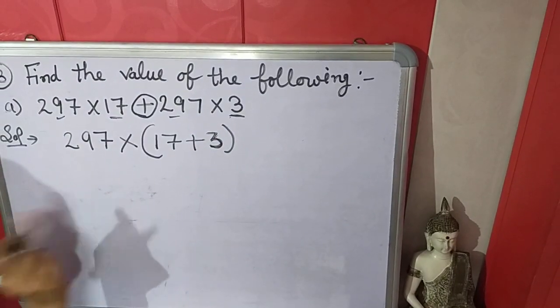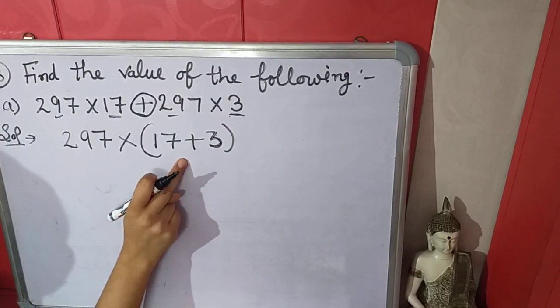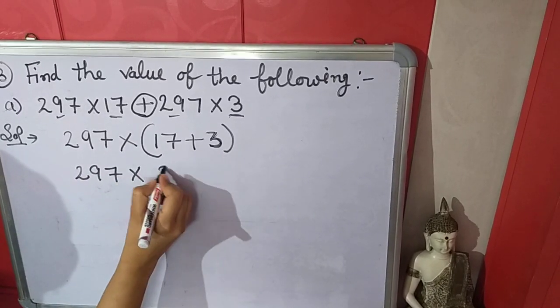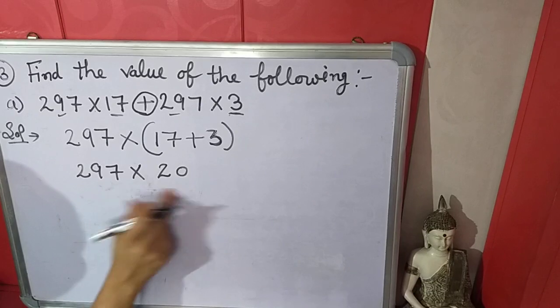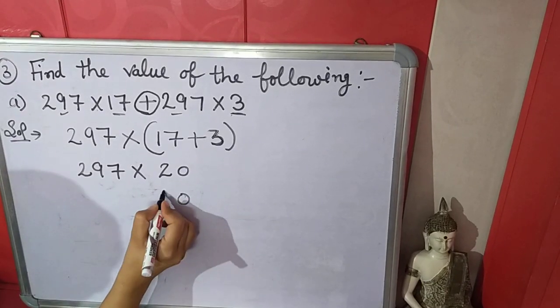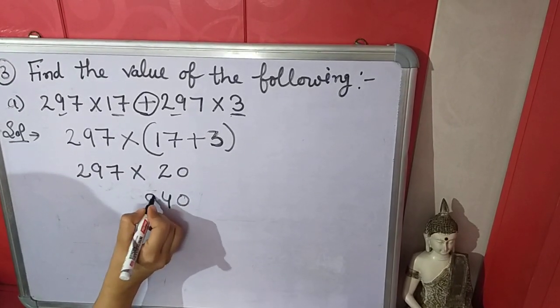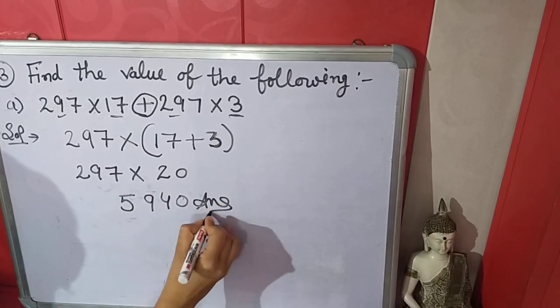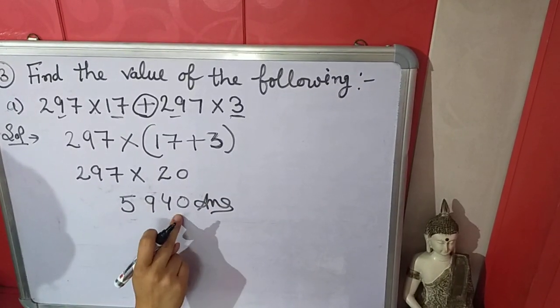Now according to BODMAS we will solve bracket first of all. So 17 plus 3 is 20. Now multiply it. 297 times 20, so the answer will be 5940.